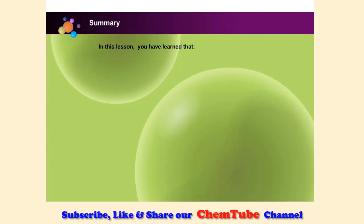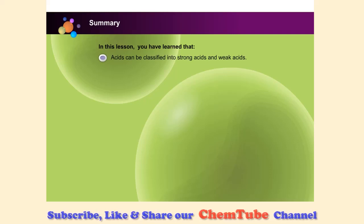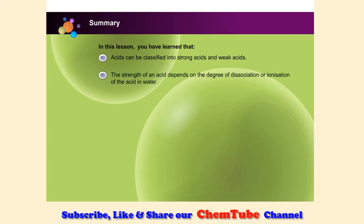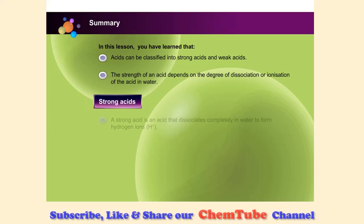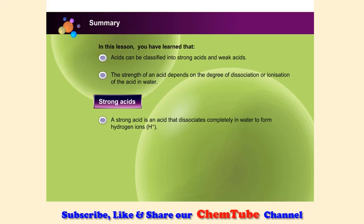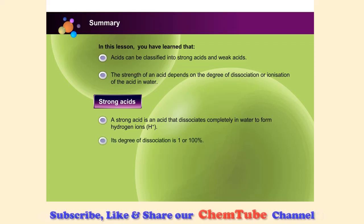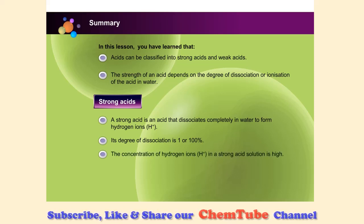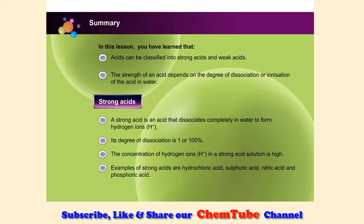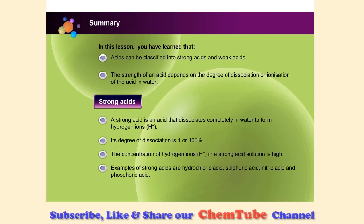In this lesson, you have learned that acids can be classified into strong acids and weak acids. The strength of an acid depends on the degree of dissociation or ionization of the acid in water. A strong acid is an acid that dissociates completely in water to form hydrogen ions. Its degree of dissociation or ionization is 1 or 100%. The concentration of hydrogen ions in a strong acid solution is high. Examples of strong acids are hydrochloric acid, sulfuric acid, nitric acid, and phosphoric acid.